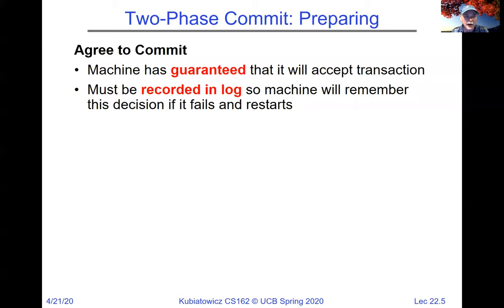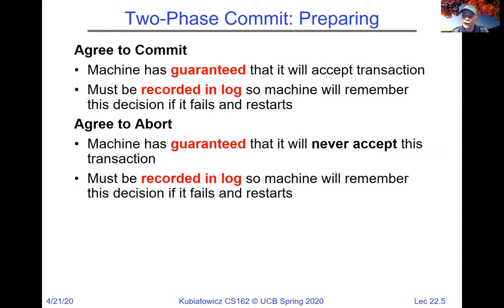In the prepare phase, if a machine decides to commit, it guarantees it will accept the transaction. It makes a mark in its log before it responds, so even if it crashes before telling the coordinator, when it comes back up it looks in its log and sees what it decided. If it agrees to abort instead, the machine is guaranteed it'll never accept the transaction, even if it crashes and comes back up. This is also recorded in the log.